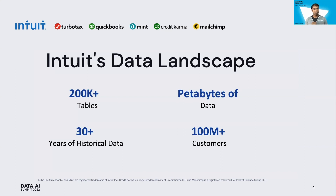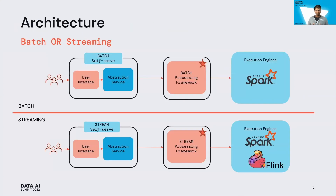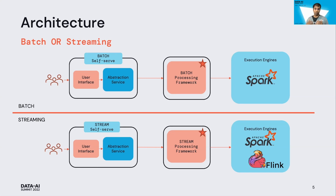Our data ecosystem is big and complex. We have hundreds of thousands of tables with petabytes of data containing decades of historical information, siloed across various systems. Our goal as a data platform team is to make the life of a data worker simple. One challenge we've seen is that there are different ecosystems built for processing batch and streaming — different user interfaces, different frameworks, and sometimes different execution engines. The reasons could be historical: initially you'd receive data as files and build an ecosystem around that, then as data became more real-time, the streaming ecosystem would be built.